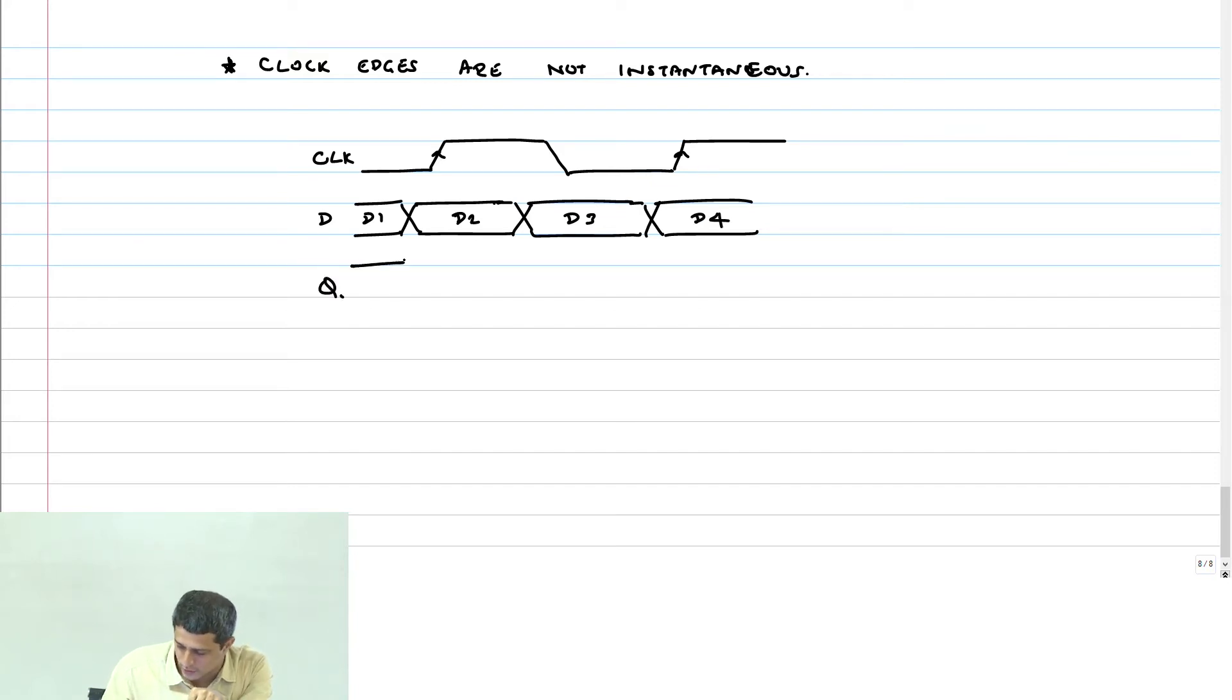Q basically should just, I do not know what this state is. And from the clock edge, this change should happen. So, this will be d2 and after the thing it will become d4.